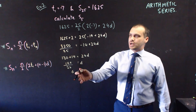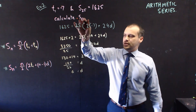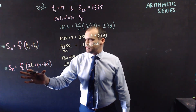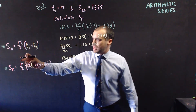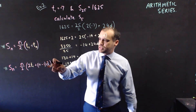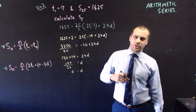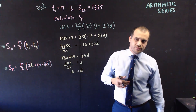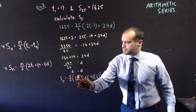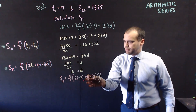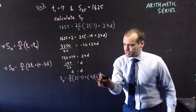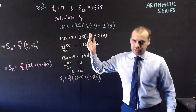Now, the question asked me to calculate S5. So now I can just take all the information I have and sub it back into this formula with an n of 5, a first term of negative 7, and a common difference of 6, and I'll be able to find S5. So the sum of the first five terms is equal to 5 over 2 times 2 times the first term, plus 5 minus 1 which is 4, times the common difference, 6.